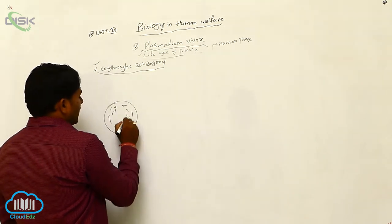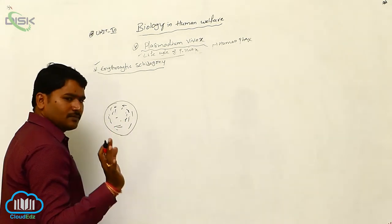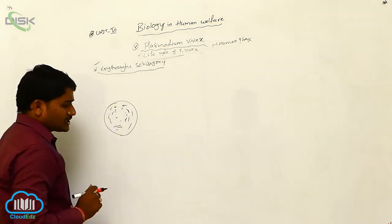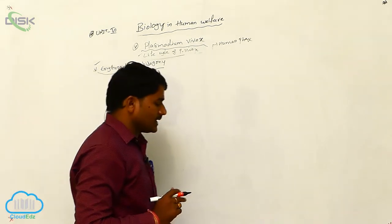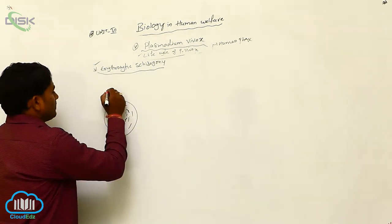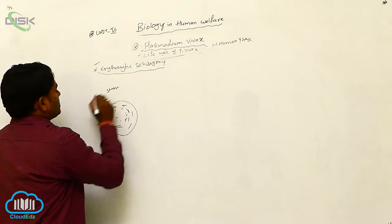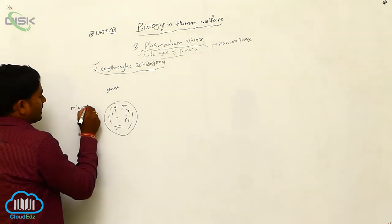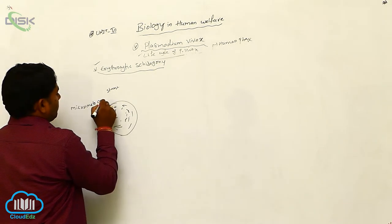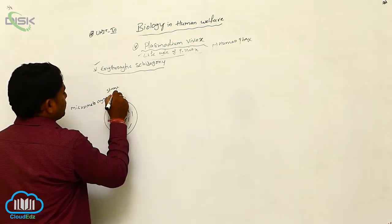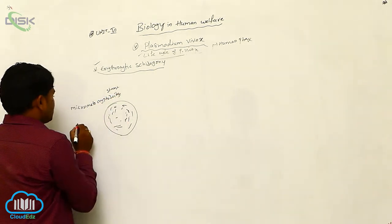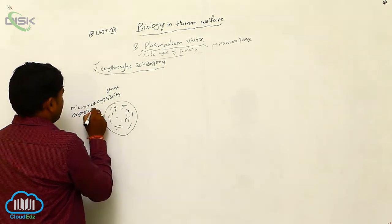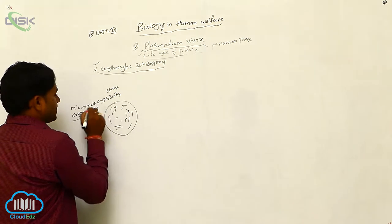RBC has no nucleus. It has only hemoglobin substance. Erythrocytic schizogony begins with two stages. One is micro-meta-cryptozoites, otherwise cryptozoites.